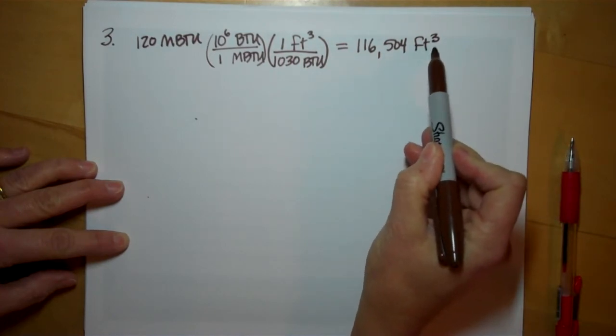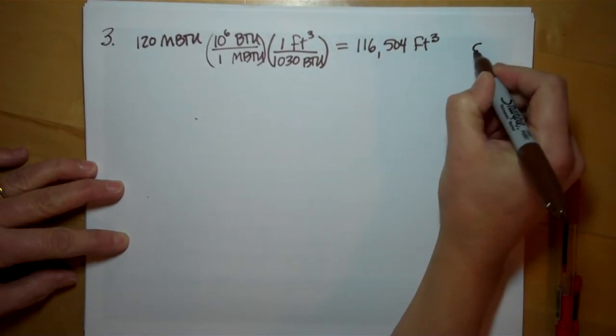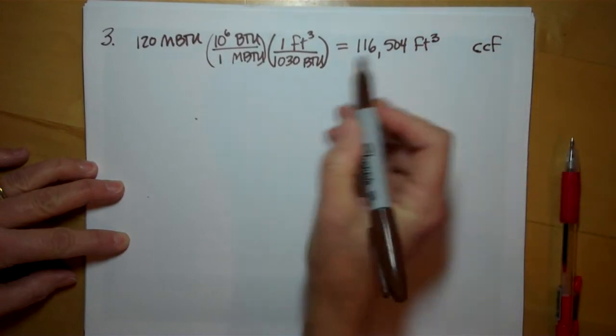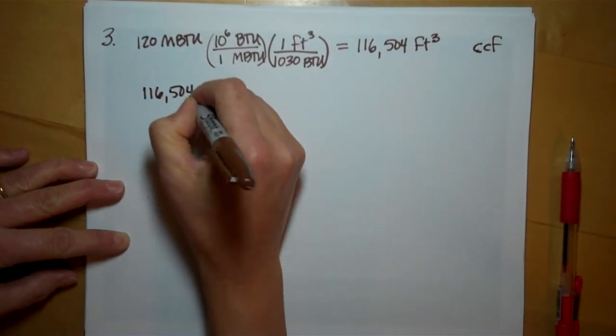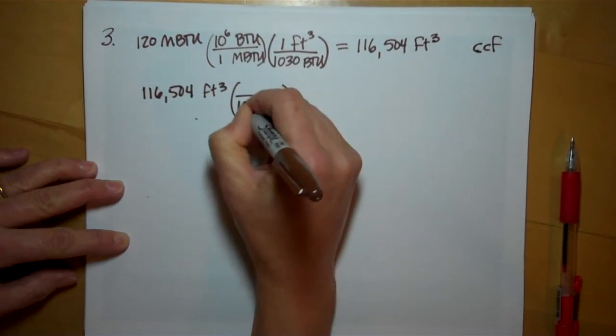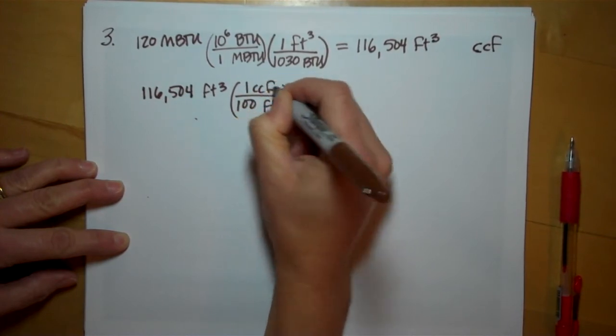Natural gas usually isn't purchased in the cubic foot. It's purchased in the 100, that's centi, the 100 cubic foot. So if we have 116,504 cubic feet of natural gas, there's 100 cubic feet in one CCF.